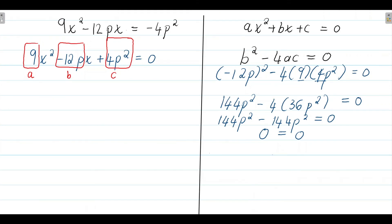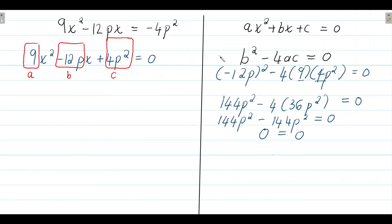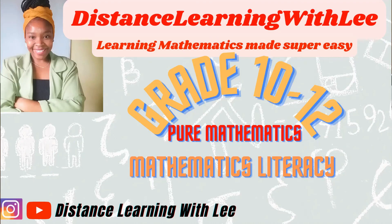From solving this equation, we see the left-hand side equals the right-hand side — zero equals zero. This tells us that the values of p that will ensure the equation has equal roots are all real numbers. Therefore, the final answer is p is an element of the real numbers. And that's it — see you on the next upload, Distance Learning with Lee.